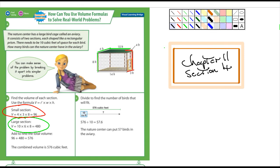So let's look at this first example. It's a good example. It says the Nature Center has a large birdcage called an aviary. That is a large birdcage, often the size of like a house. It consists of two sections, each shaped like a rectangular prism. It says there needs to be ten cubic feet of space for each bird. How many birds can the Nature Center have in the aviary?